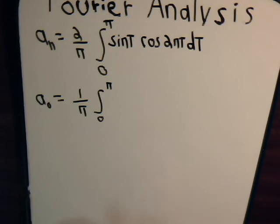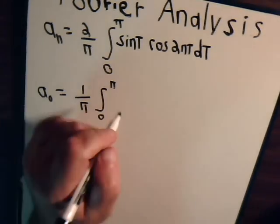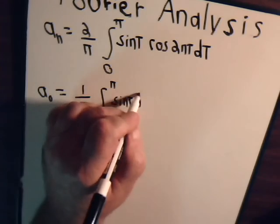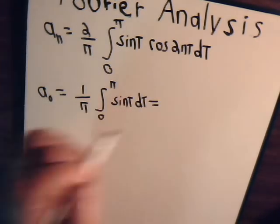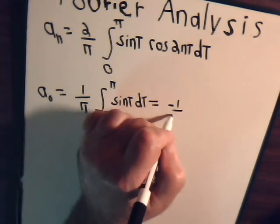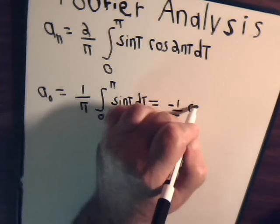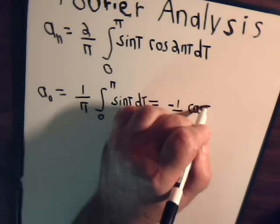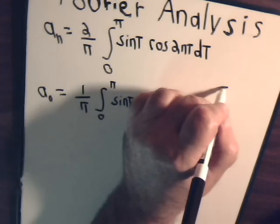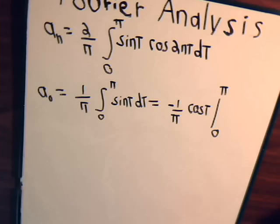So a0 equals 1 over π times this integral, just the sine of t. So that equals minus the cosine of t, of course. So minus 1 over π times the cosine of t, and t goes from 0 to π.